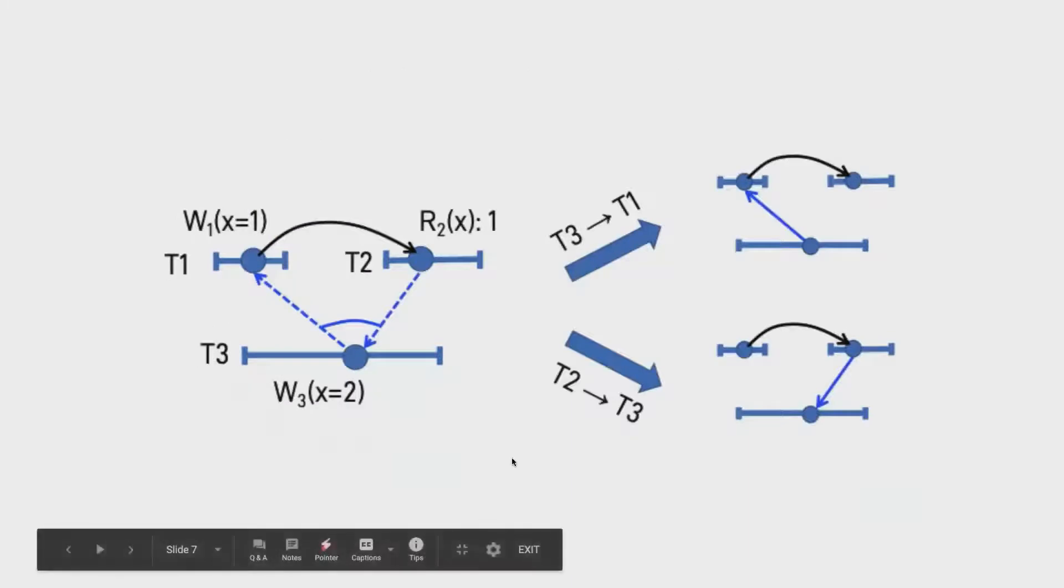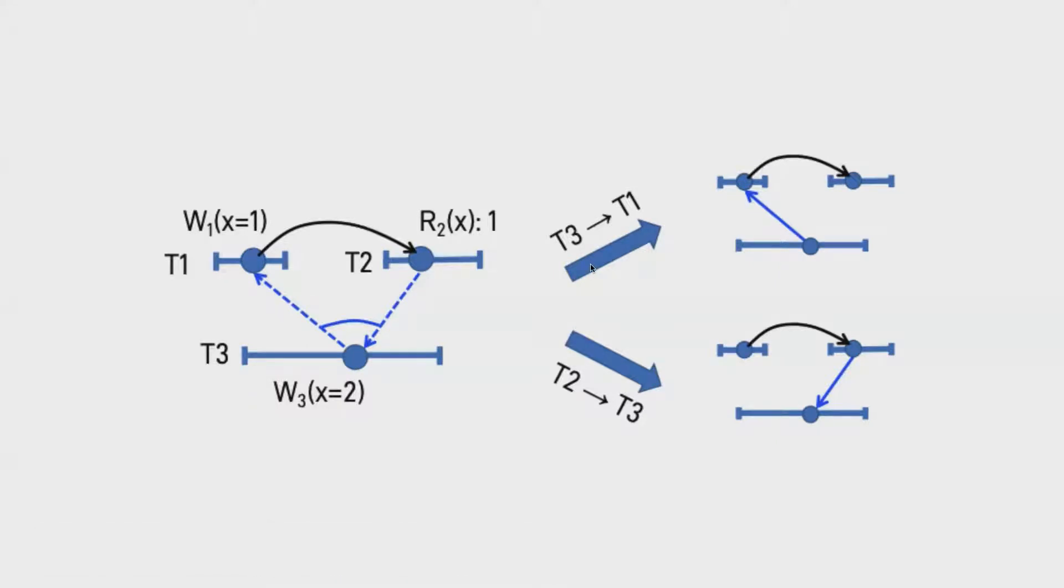So in this case when we go on to resolve these uncertainties, we consider both the cases where T3 has happened before T1 and T2 has happened after T3. Luckily in this case we see that the graph that we are seeing right now is acyclic in nature. So all of these three transaction history says that we have a serializable order of execution.